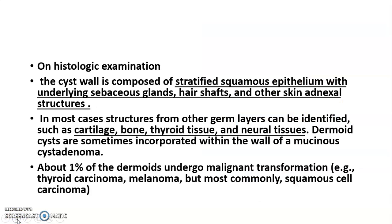On histologic examination, the cyst wall is composed of stratified squamous epithelium with underlying sebaceous glands, hair shafts, and other skin adnexal structures. In most cases, structures from other germ layers can also be identified, such as cartilage and bone.